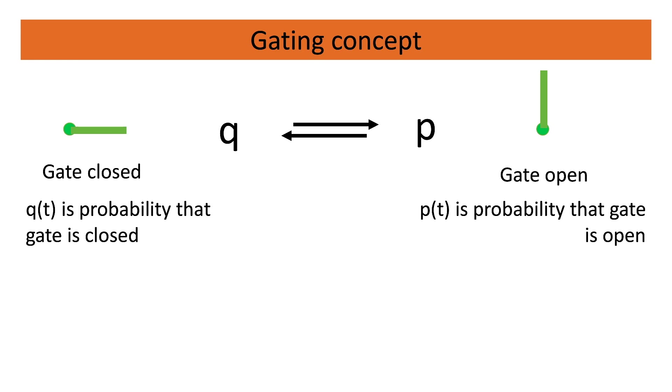In the gate concept we have two states: the gate is closed or the gate is open. We define Q as the probability that the gate is closed and P as the probability that the gate is open.